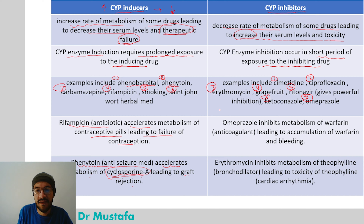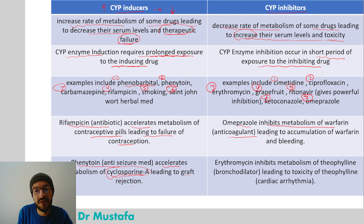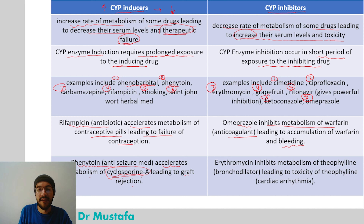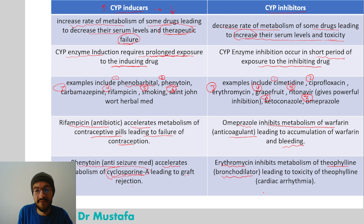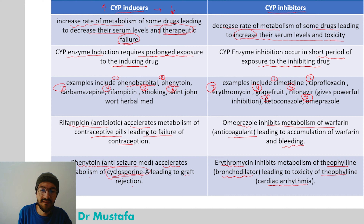Examples of CYP inhibitors: omeprazole, a proton pump inhibitor, inhibits the metabolism of warfarin (an anticoagulant), leading to warfarin accumulation and bleeding. Another example: erythromycin (an antibiotic) inhibits the metabolism of theophylline (a bronchodilator), leading to theophylline toxicity in the form of cardiac arrhythmia.